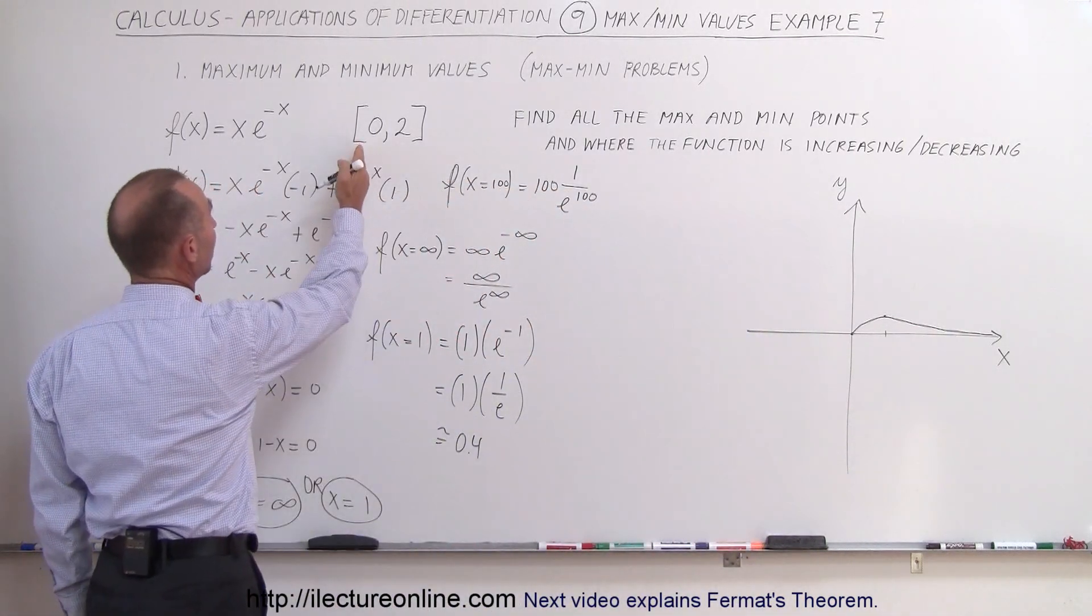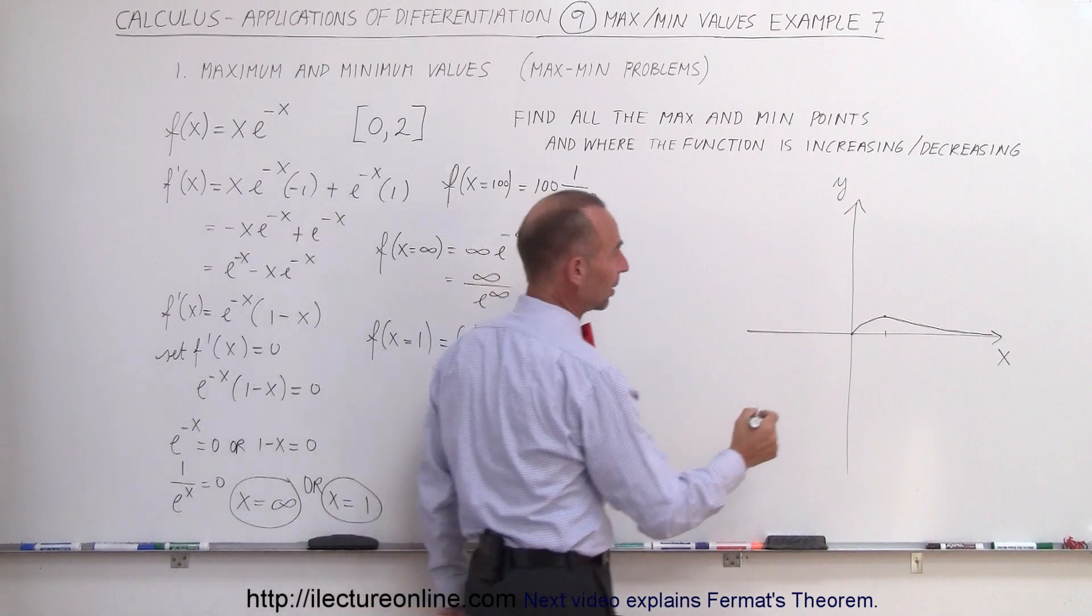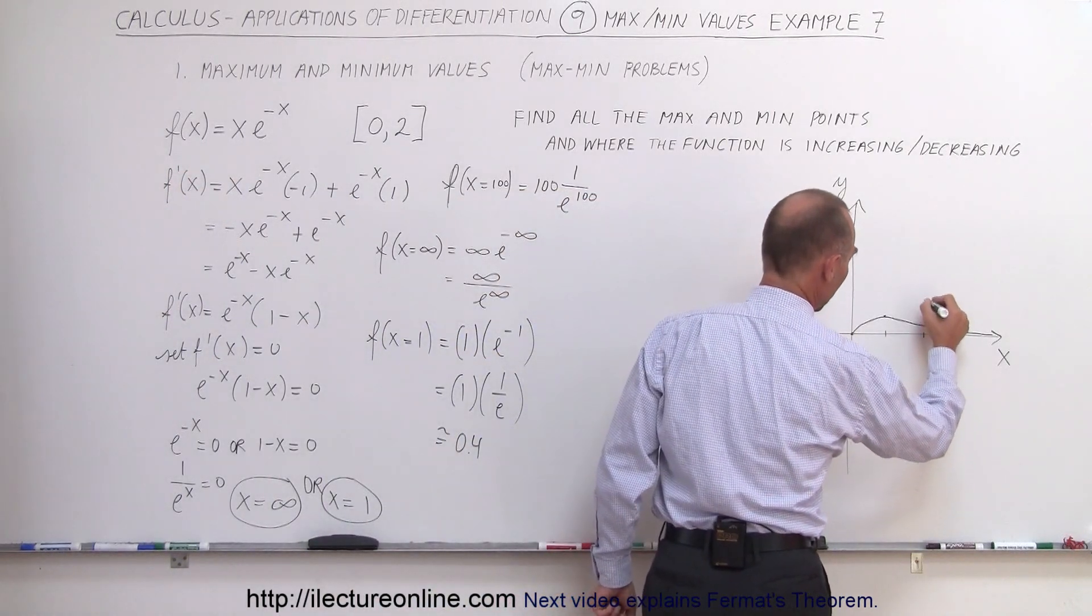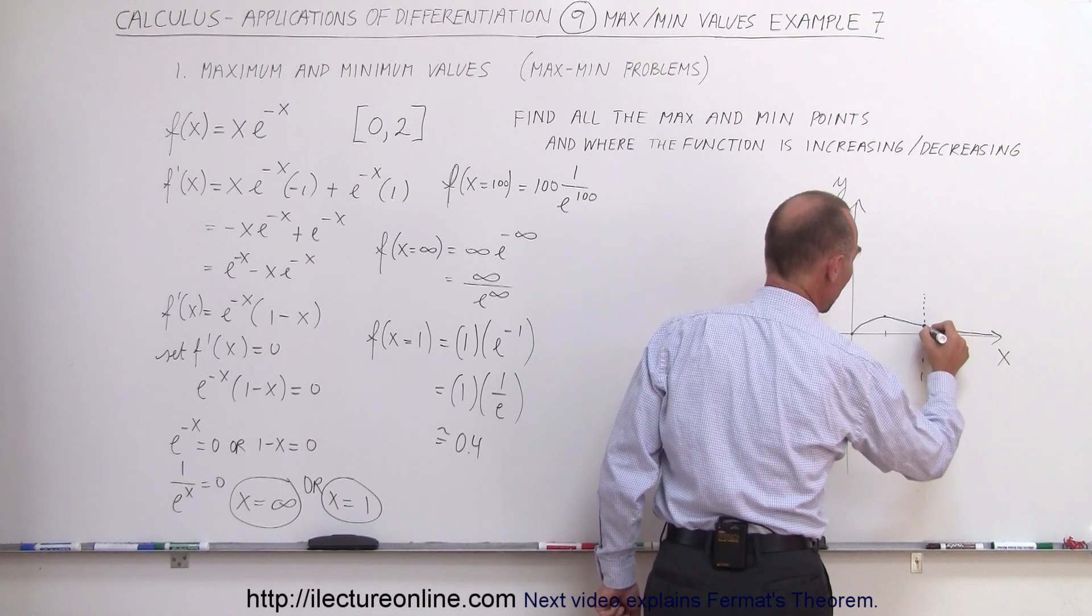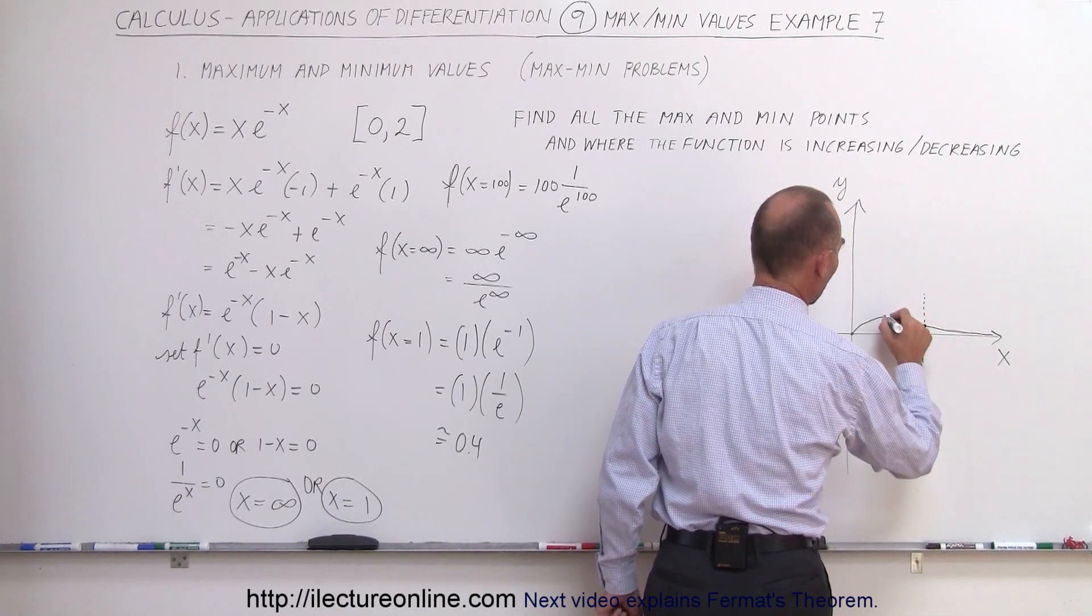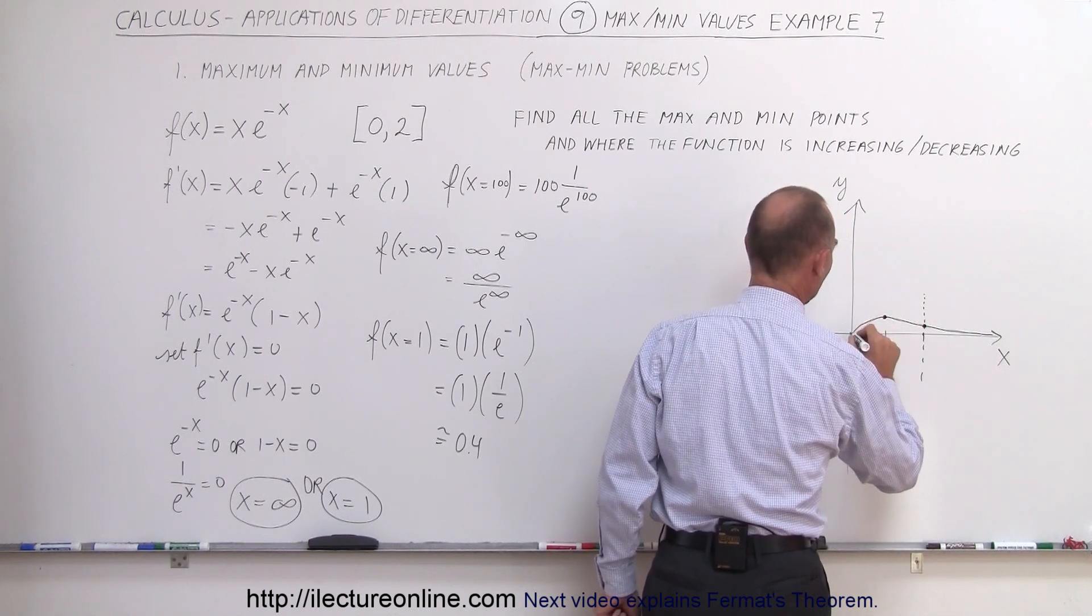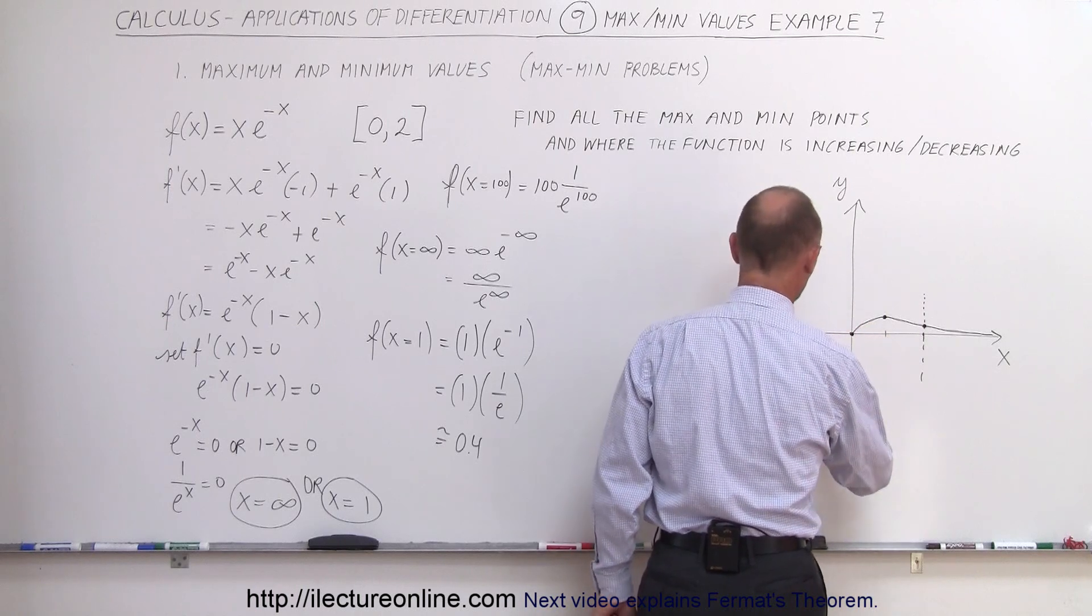The interval is from 0 to 2, so we cut that off at 2. We cut it off at this value right here. This would be the y value when x = 2, and this is the y value when x = 0, so we get (0,0).